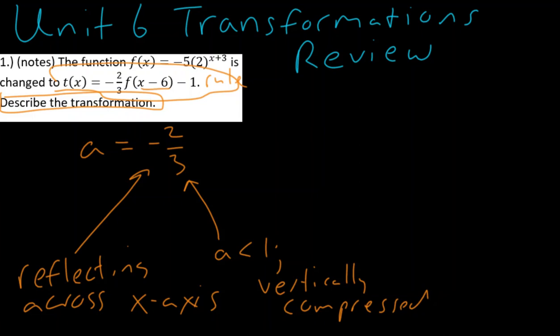Here, where I have x minus h, I have x minus 6. Remember, we always set this equal to zero, our grouping, and so this implies that x is equal to positive 6, and so we know that this will translate, since it's a positive 6, right 6.